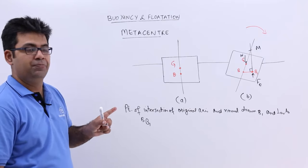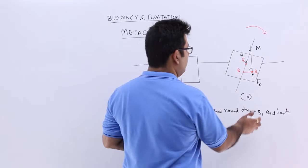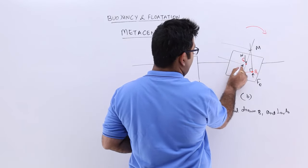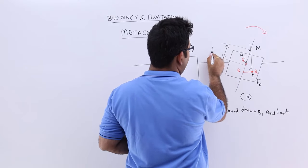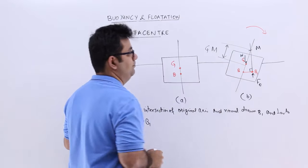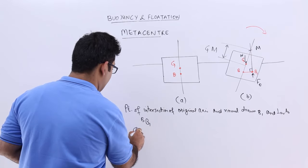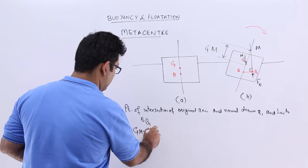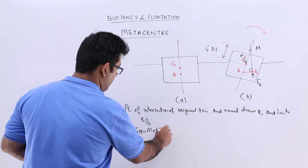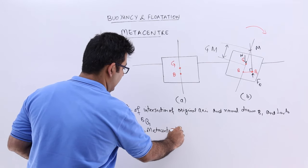So I hope you got this concept. Now we need to determine this length or this distance which is MG or GM. This GM is called the metacentric height.